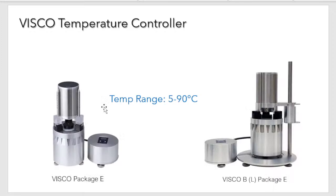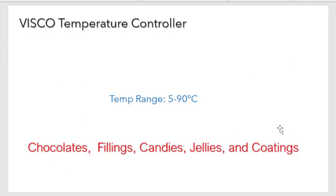The temperature controller fits both the portable VSCO, seen on the left, and the VSCO BL, seen on the right. It's the same controller with slightly different accessories to fit each instrument. This range of 5 to 90°C should be sufficient for chocolates, fillings, candies, jellies, and coatings. If you need a temperature higher than 90°C, a different accessory is available — it would be controlled via a water bath.